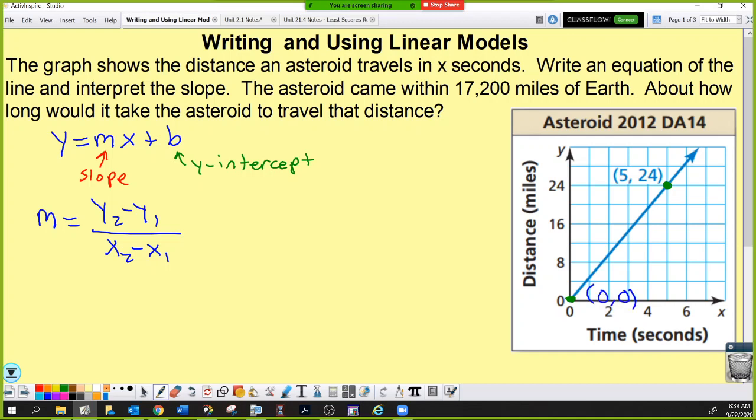It doesn't matter which point you call x1, y1, which point you call x2, y2. All that matters is that you don't mix and match. Since I don't want to mess with negatives today, I will call this one x1, y1, and this one x2, y2. When I fill out my slope formula, it says 24 minus 0 over 5 minus 0. That slope is 24 over 5.